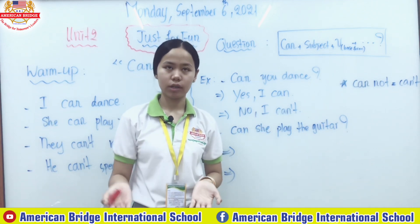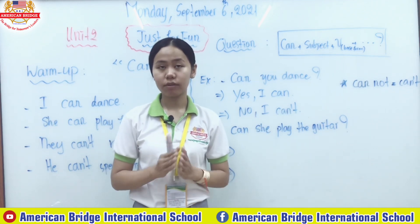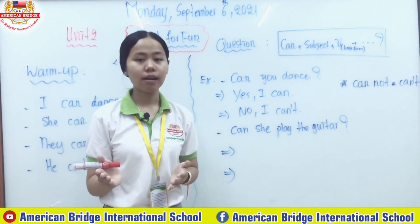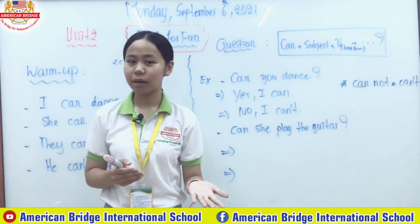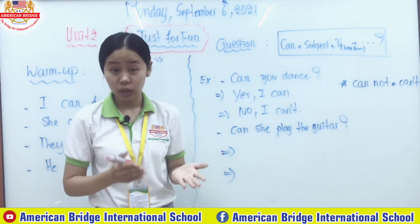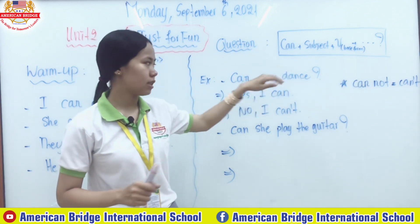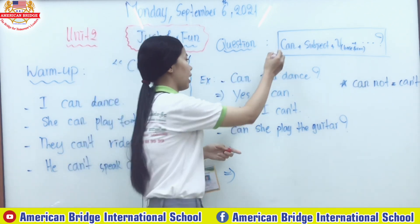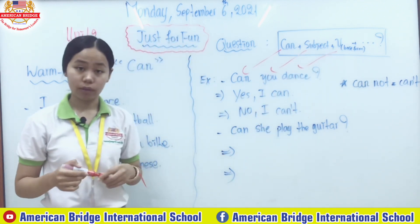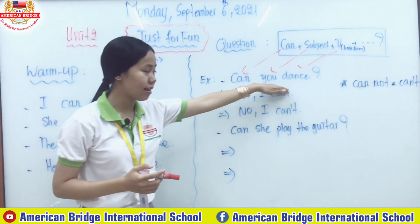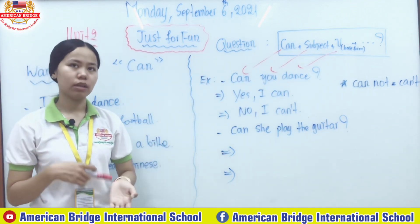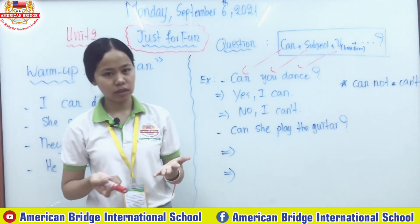We use 'can' in the question form when we want to ask someone about their ability — something they can do. For example: 'Can you sing a song?' 'Can you speak Chinese?' 'Can you dance?' — here 'can' comes in front of the subject 'you,' followed by the verb in base form.